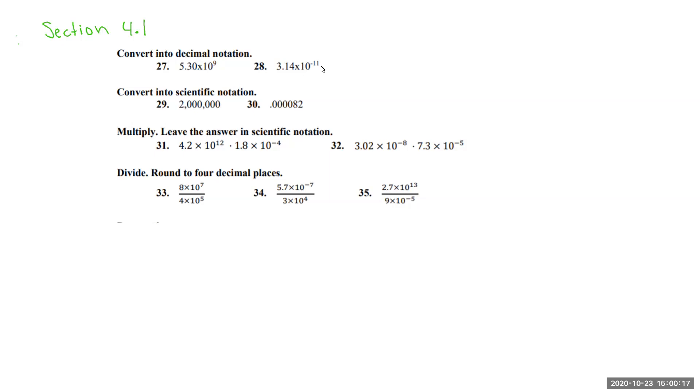The best way that I found to do this, starting with number 27, we're going to do 5.3. We start out with the decimal and then look at the exponent and whether it's positive or negative. Since this is positive 9, we're going to move the decimal place over 9 spots to the right because it's positive.